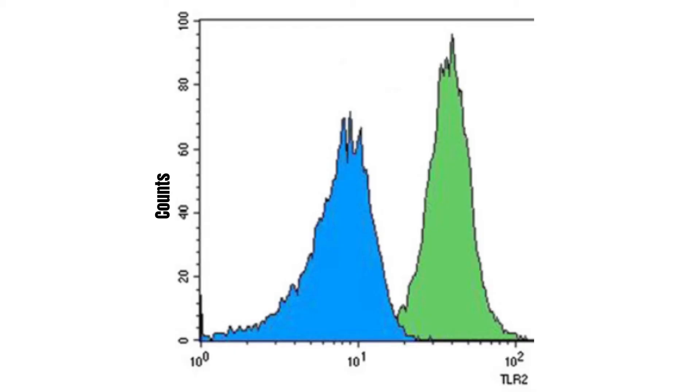A histogram typically plots the intensity on the y-axis and the number of events detected at that intensity on the x-axis. A large number of events detected at one particular intensity will be displayed as a spike on the histogram.